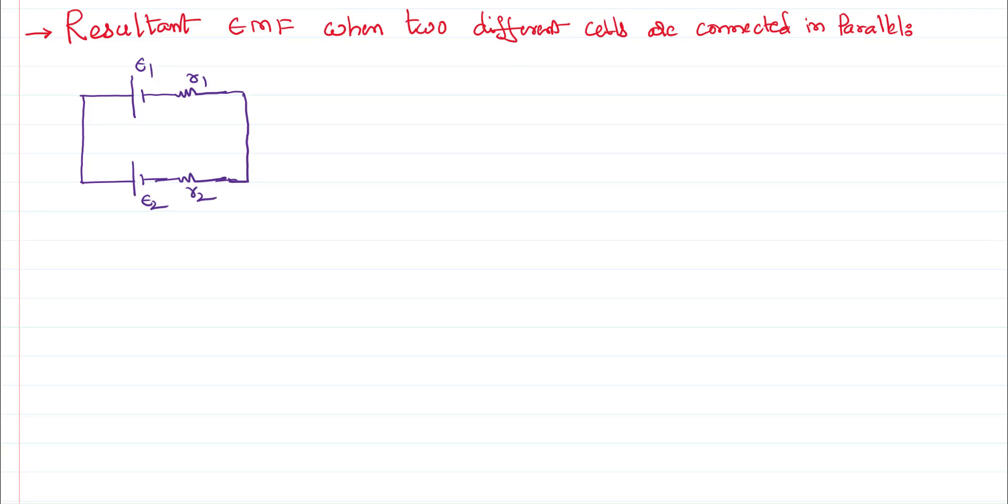In this problem, we would like to calculate what is the resultant EMF of two different cells. This is cell 1 with EMF e1, another cell with EMF e2, each one having some internal resistance. The cells are not ideal, therefore they have some internal resistance r1 and r2. Then what is the effective EMF when they are connected in parallel?